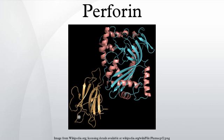Perforin is thought to act by creating holes in the plasma membrane, which triggers an influx of calcium and initiates membrane repair mechanisms. These repair mechanisms bring perforin and granzymes into early endosomes.